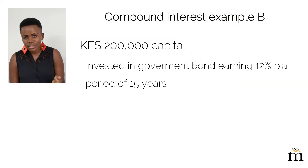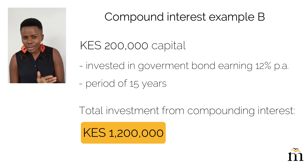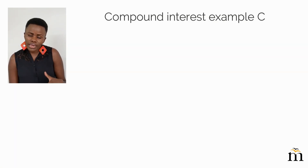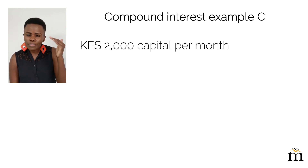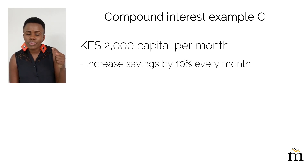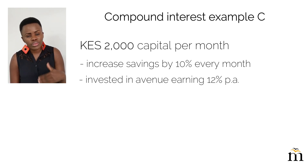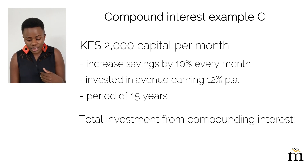If you double the amount — say you invest 200,000 at 12% for 15 years — you end up with 1.2 million, so 1 million is free money. But you might say, 'Kelly, I don't have 100,000 or 200,000 to invest, I just have little amounts per month.' So let's work some math on that. Say you have just 2,000 shillings — you've just started your career and you can only set aside 2,000 shillings per month — but you keep getting pay rises, so you keep increasing your savings by 10% every year and investing it immediately into an avenue earning 12%.